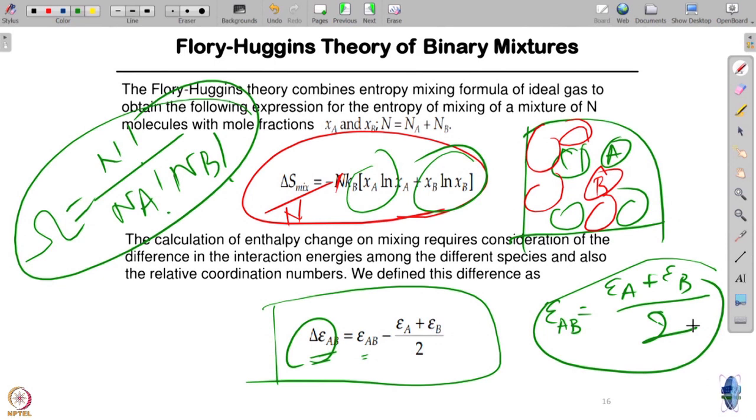There is also the geometric rule. If A and B interaction is just the average of the two, then you get ideal solution, then you get Raoult's law. But that's not like water-DMSO. You cannot see water-DMSO interaction from just water-water interaction and DMSO-DMSO interaction, because the hydrogen bonding between A and B just disappears. The interaction between A and B brings a very essential new ingredient, and that is captured by delta epsilon AB.